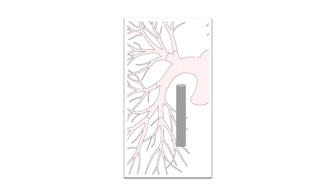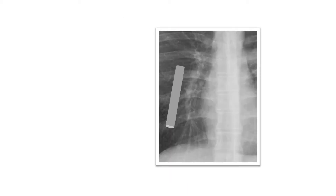Blood vessels have the shape of cylinders and course in various directions. If the course of the blood vessel is vertical, then we can predict that the radiological shape will be a rectangle. On this X-ray examination, adjacent to the right heart border, we see vertical white rectangles which represent branches of the right pulmonary artery.